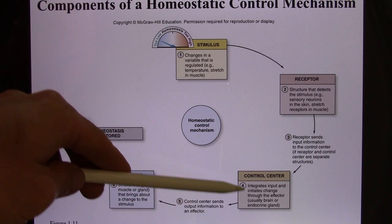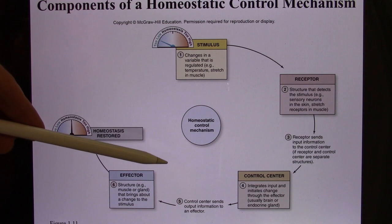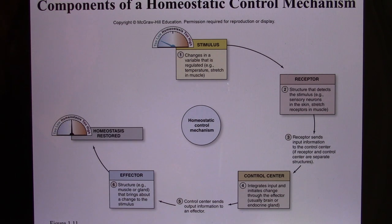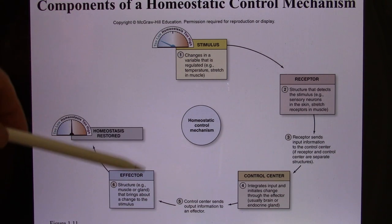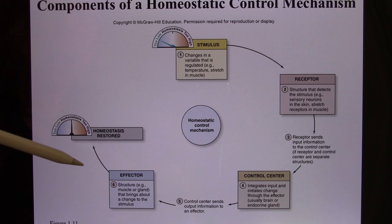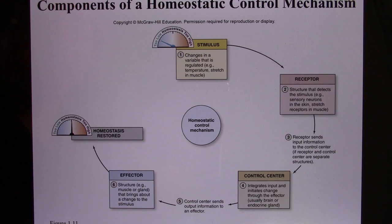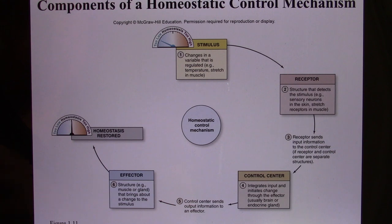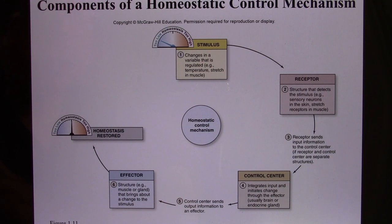When your body temperature increases, you're going to send a signal to your sweat gland. So your sweat gland is your effector, and it produces sweat. When the sweat goes to the surface — your skin — and evaporates, you break the hydrogen bonds, releasing energy, so the heat is released. That's why you sweat in the summer: to reduce your body temperature.